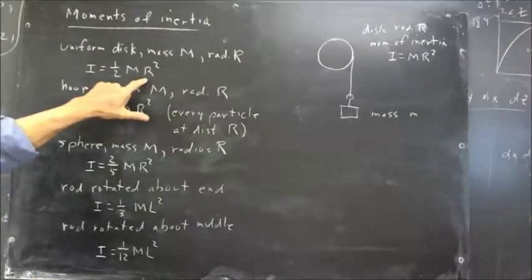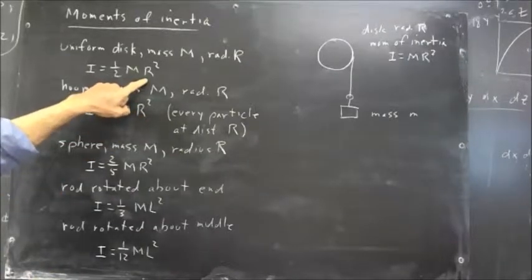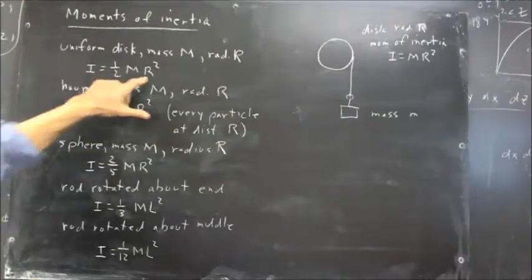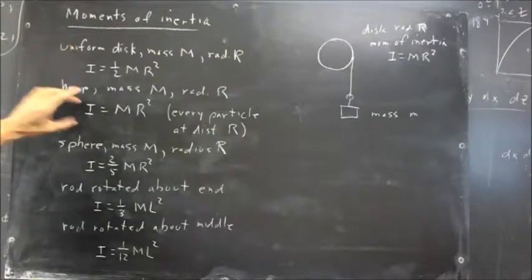So, the little r, the distance of the various points from the center, is usually less than big R, so that you have a moment of inertia that's less than that for the hoop.